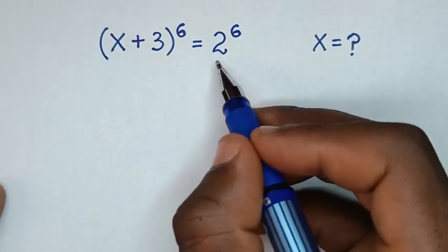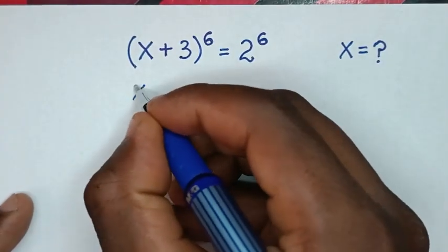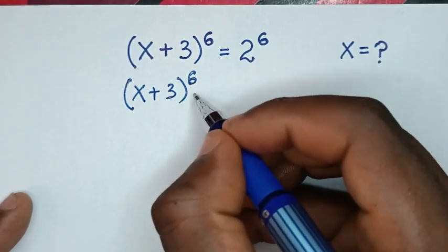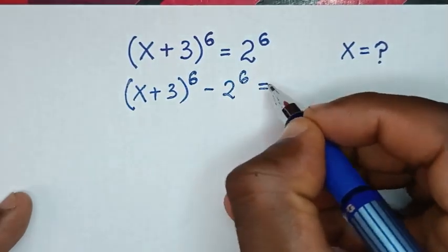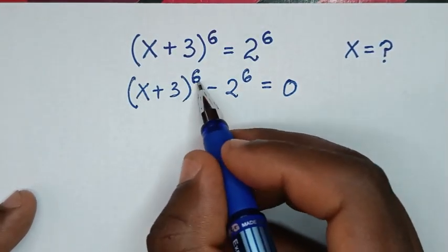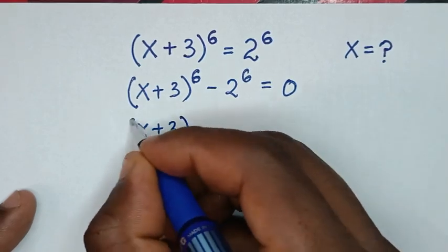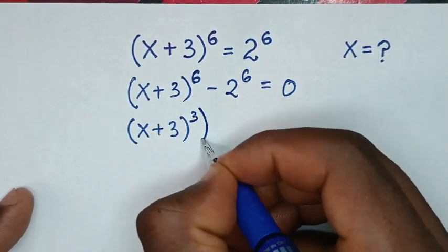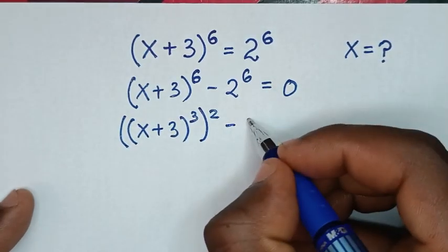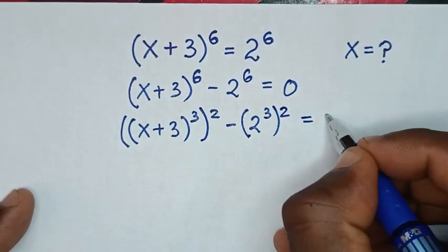In the first step, we'll take the 2^6 to the left side. So it will be (x + 3)^6 minus 2^6 is equal to 0. Then we'll rewrite (x + 3)^6 as [(x + 3)^3]^2, and 2^6 as [2^3]^2, so it becomes [(x+3)^3]^2 minus [2^3]^2 = 0.